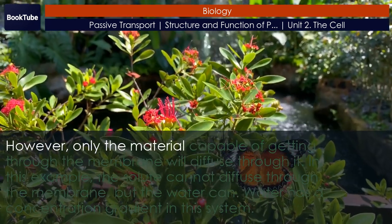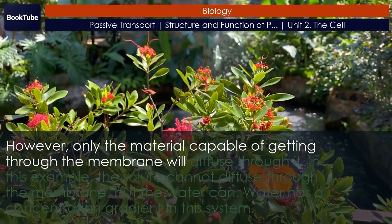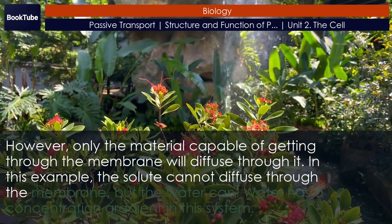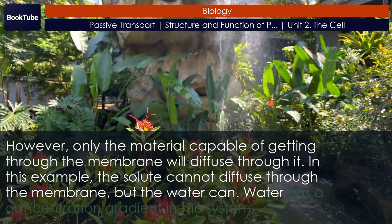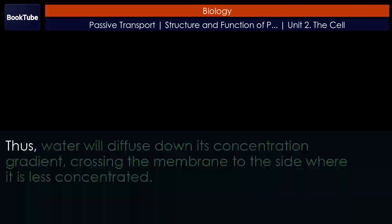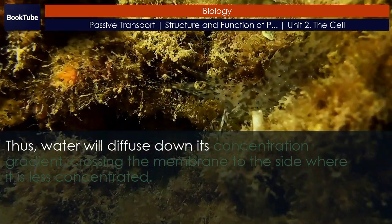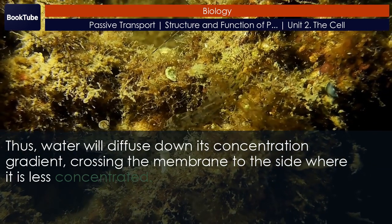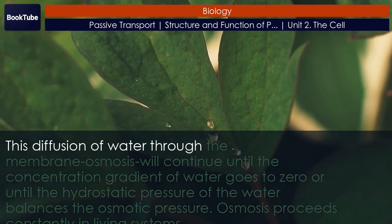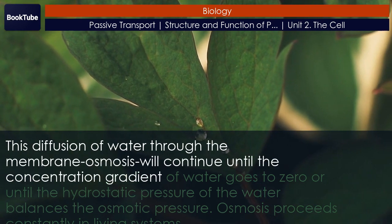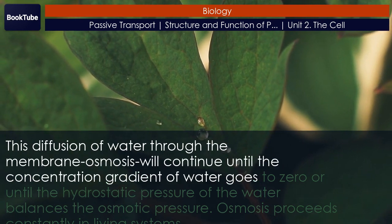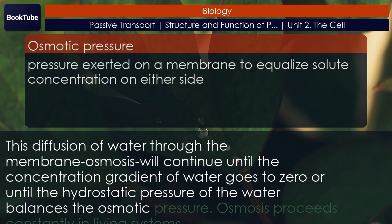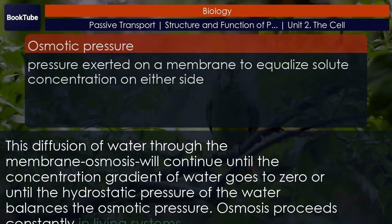Water has a concentration gradient in this system. Thus, water will diffuse down its concentration gradient, crossing the membrane to the side where it is less concentrated. This diffusion of water through the membrane — osmosis — will continue until the concentration gradient of water goes to zero, or until the hydrostatic pressure of the water balances the osmotic pressure. Osmosis proceeds constantly in living systems.